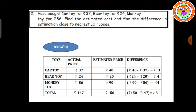Next problem: Vasu bought a car toy for 37 rupees, a bear toy for 24 rupees, and a monkey toy for 86 rupees. Find the estimated cost and find the difference in estimation closest to nearest 10 rupees. Write down the toy names. The actual price of car toy is 37 rupees. Now we have to see the ones place. The ones digit is 7 — 7 is greater than 5, so add plus 1 to the previous digit: 3 plus 1 is 4, making it 40 rupees.